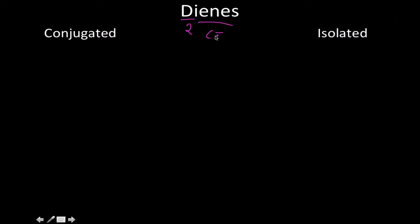Dienes implies that there's two alkene groups, and there's two different ways that we can classify dienes. There's conjugated, and then there's isolated.